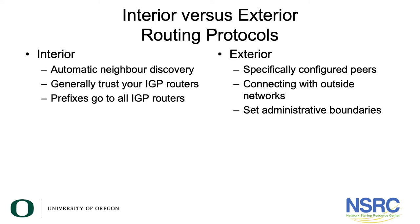What is the difference between interior versus exterior routing protocols? With interior routing protocols, automatic neighbor discovery is usually enabled. You generally trust your IGP routers, and prefixes go to all IGP routers. With exterior routing protocols, you would need to specifically configure your peers. You're connecting with outside networks, and as such, you would also have to set administrative boundaries.